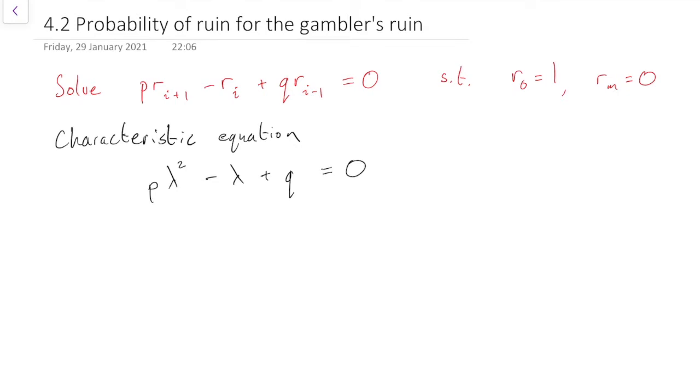This equation, we could try to solve it using the solution equation for quadratic equations, but we can actually factorise this. It factorises as p lambda minus q lambda minus 1 equals 0.